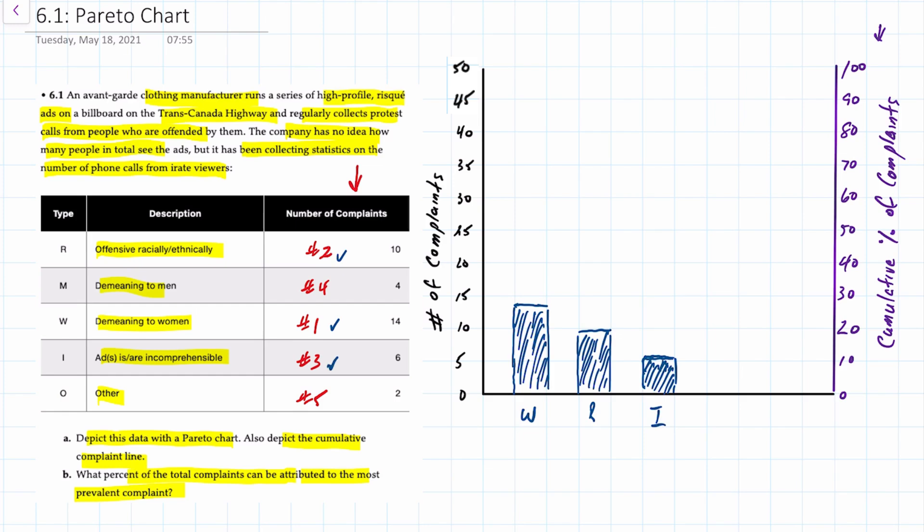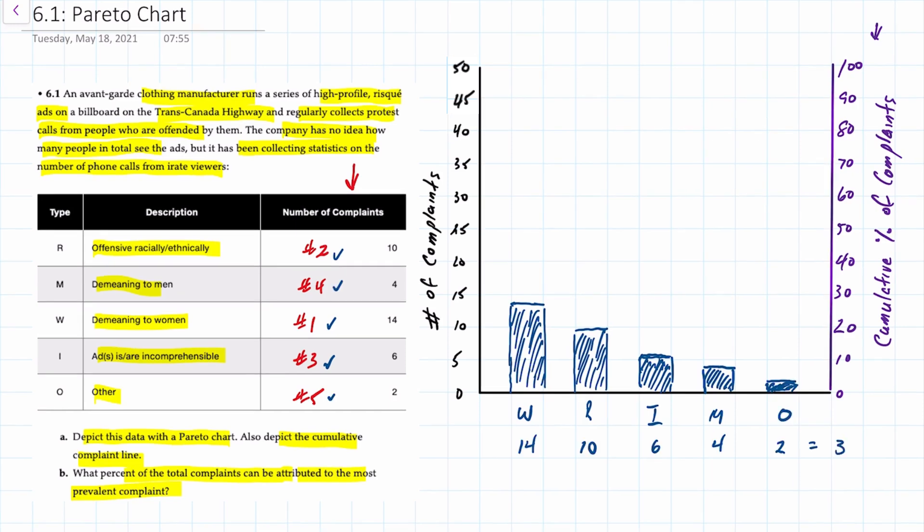Then we have demeaning to men which is four complaints. So it's just below five here. And then the last one is other which has two complaints attributed. Now that equals a total of 36 complaints.